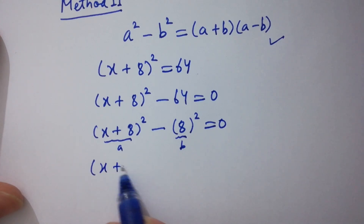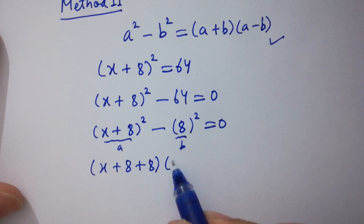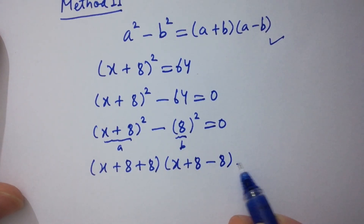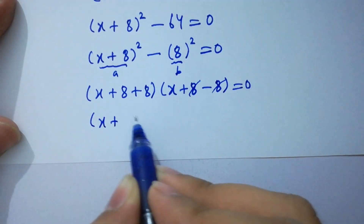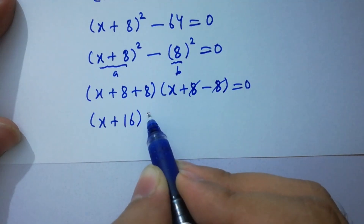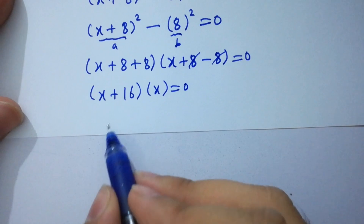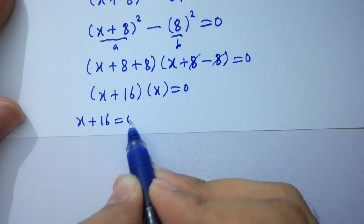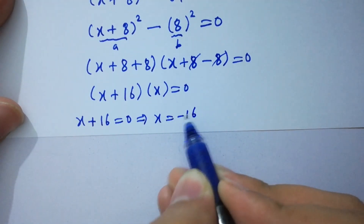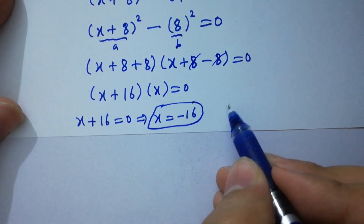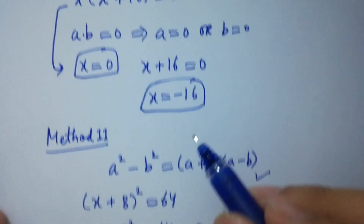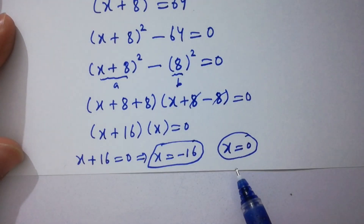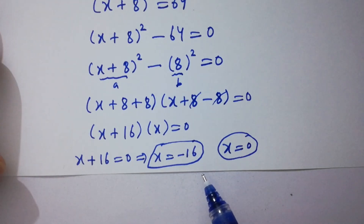We have (x + 8 + 8)(x + 8 − 8) equals 0. Here 8 and 8 cancel in the second bracket, giving x plus 16 equal to 0 and x equal to 0. So x equals minus 16 and x equals 0. You can see that by Method 1 we get x equal to 0 and minus 16, and by Method 2 we also get 0 and minus 16 — both values are the same.